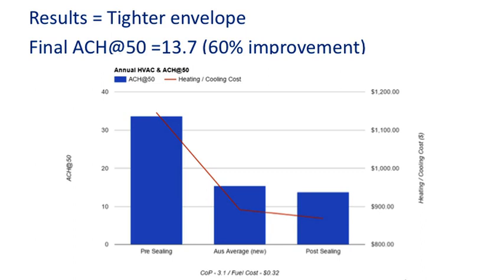After the improvements, re-testing showed 13.7 air changes — a 60% improvement, and also lower than what we're currently building to on average for new housing. HVAC usage was sitting at around $1,100 before sealing. Post-sealing, we've got a reduction of $277 in heating and cooling costs. That doesn't sound like much, but remember it only cost $270 — that's a return on investment of 12 months, which is pretty good, especially when you look at return on investment of solar and similar measures.